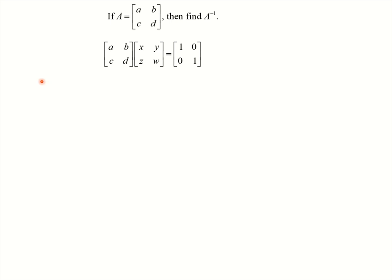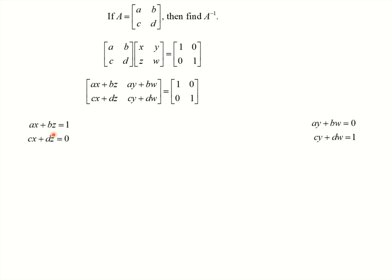So [a, b, c, d] times [x, y, z, w] equals the identity [1, 0, 0, 1]. Doing the matrix multiplication on the left-hand side gives a messy result, and writing out the four equations, I want to kill off x. I multiply the top equation by negative c and the bottom by positive a. Adding those two equations together, I get (AD − BC)z = −c. Solving for z gives z = −c / (AD − BC).